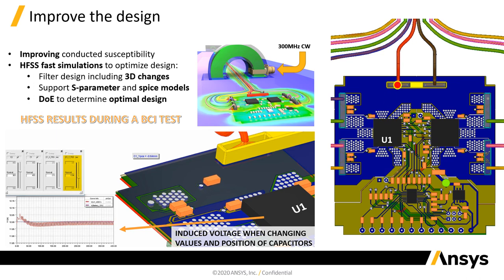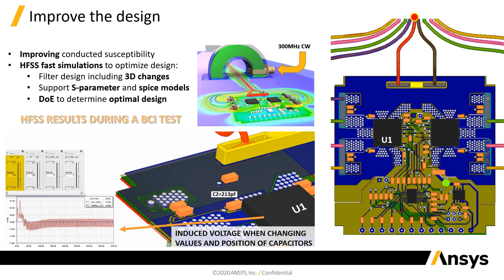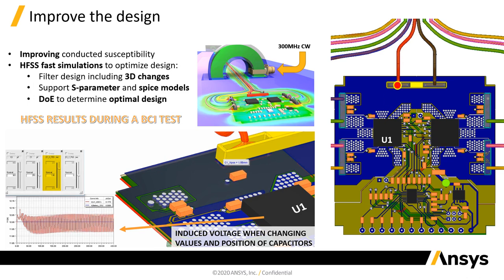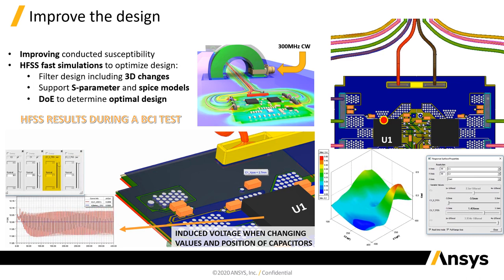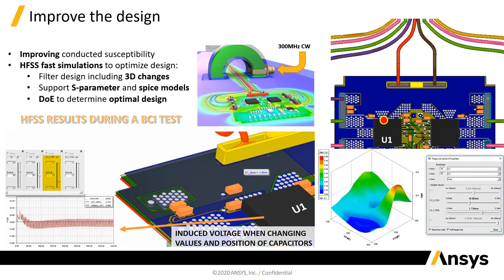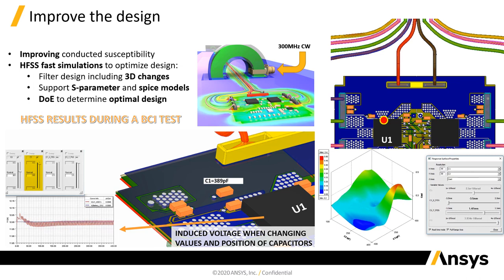Another improvement example is a bulk current injection test. We have a 12-volt DC coming from a red cable, and ideally 12 volts DC should appear at component U1. We inject a 300 MHz continuous wave using a BCI probe, and we add capacitors to filter that noise. We can change the position of capacitor C1 and see how noise injected by the BCI probe is suppressed before reaching U1. HFSS leverages high-performance computing, so all these variations can be solved in parallel and very fast.